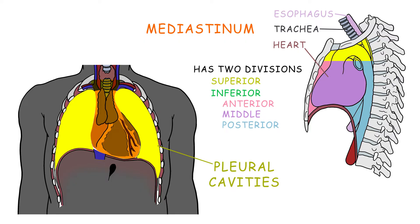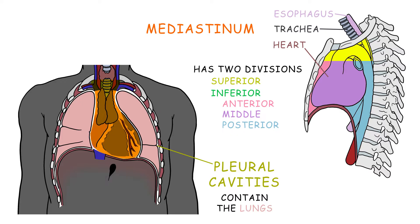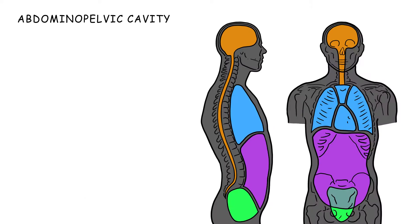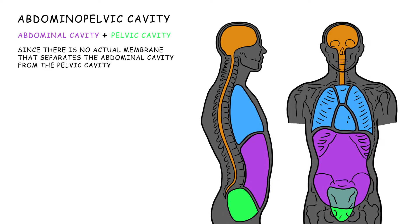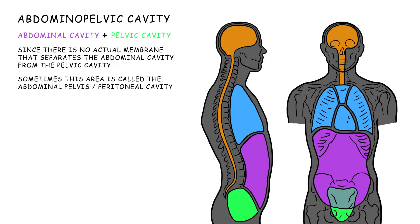The pleural cavities contain the lungs. Found beneath the diaphragm, the abdominal pelvic cavity can be divided into the abdominal cavity and the pelvic cavity. Since there is no actual membrane separating them, this area is sometimes called the abdominal pelvis or the peritoneal cavity.